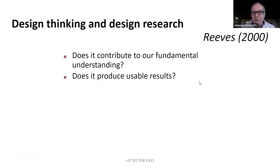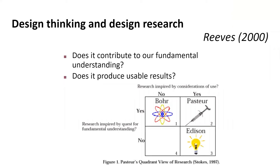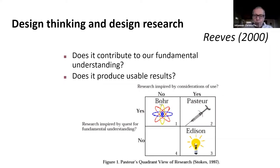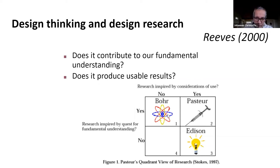Those two questions give us four quadrants. If we look at this, this is Bohr's quadrant — the structure-the-atom type of research. Bohr is not remotely worried about whether it is useful, but he does look for fundamental understanding of the workings of the atom. Other people after Bohr can then say, now that we know what the atom looks like, we'd be likely to split or fuse it — but Bohr is simply saying it is splittable or it is fusible.